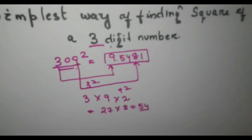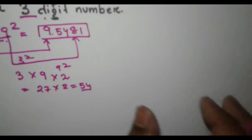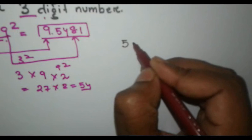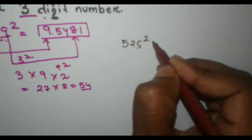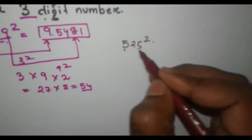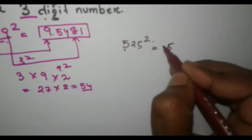So the next example that you are going to take is 525 square. So first what we have to do? We have to take 5 and write the square. 5 square is 25.